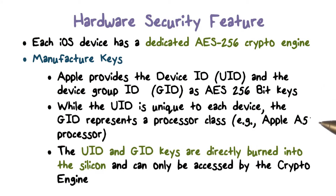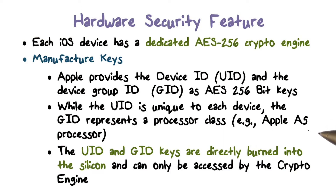The UIDs are unique to each device and are not recorded by Apple or its suppliers. The GIDs are common to all processors in a class of devices — for example, all devices using the Apple A8 processor. The GIDs are used for tasks such as delivering system installation and updates. A unique feature of iOS devices is that the UID and GID keys are directly burned into silicon.